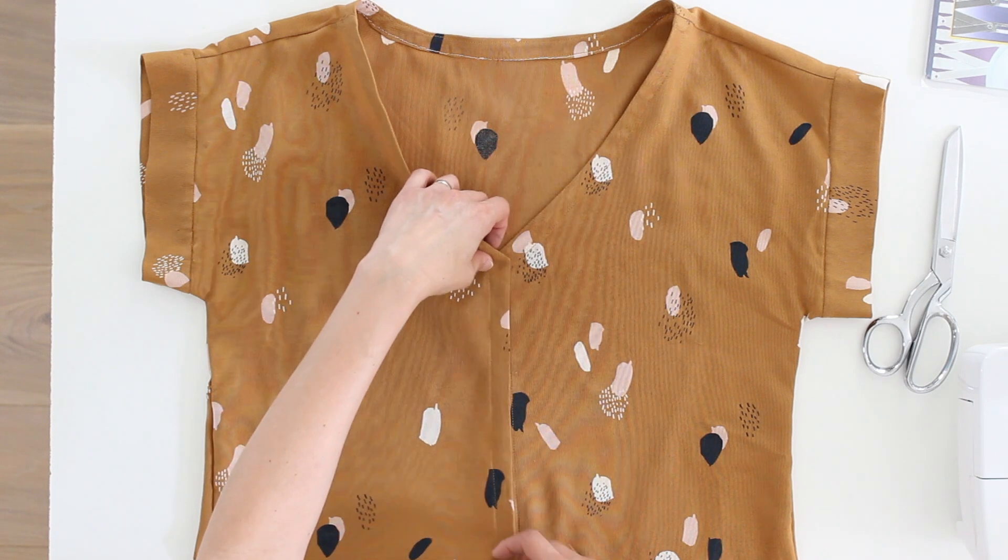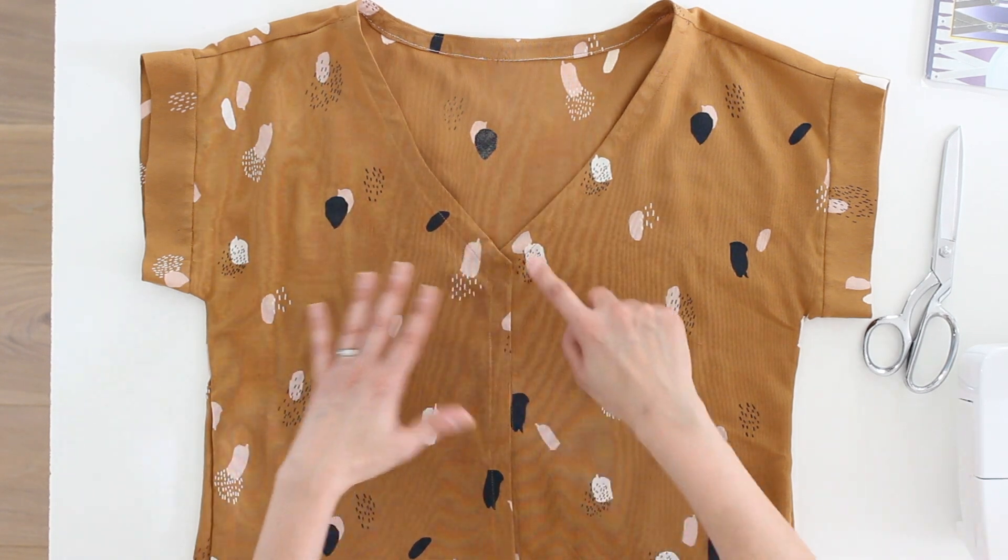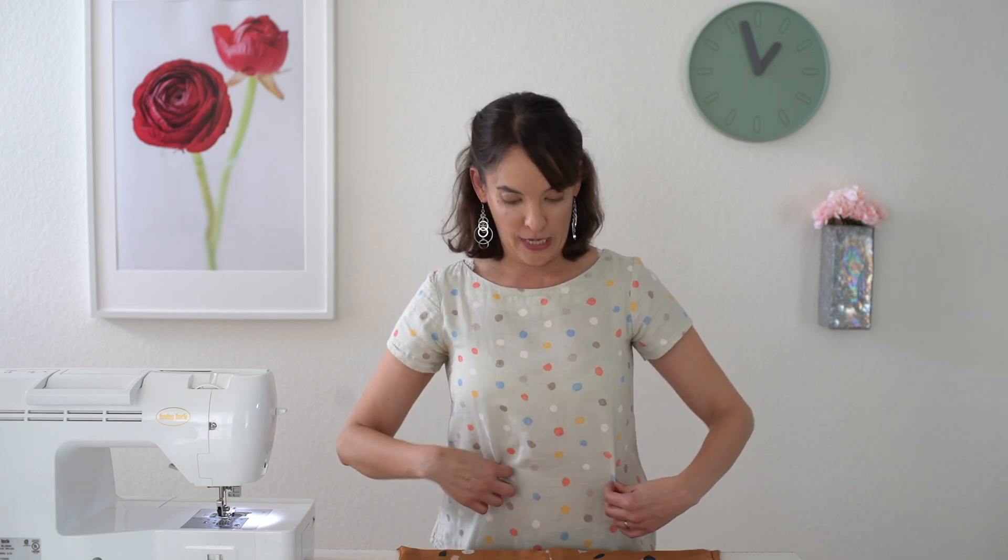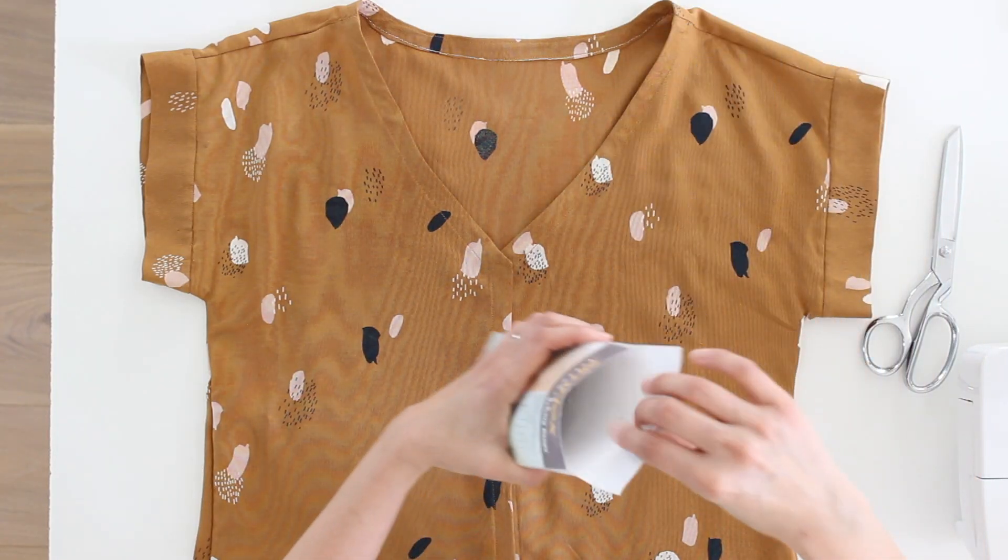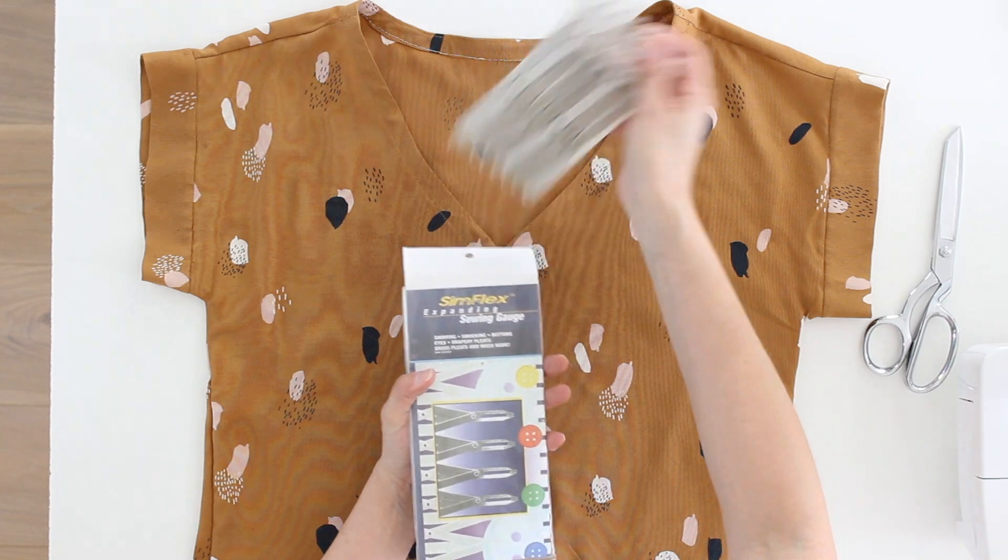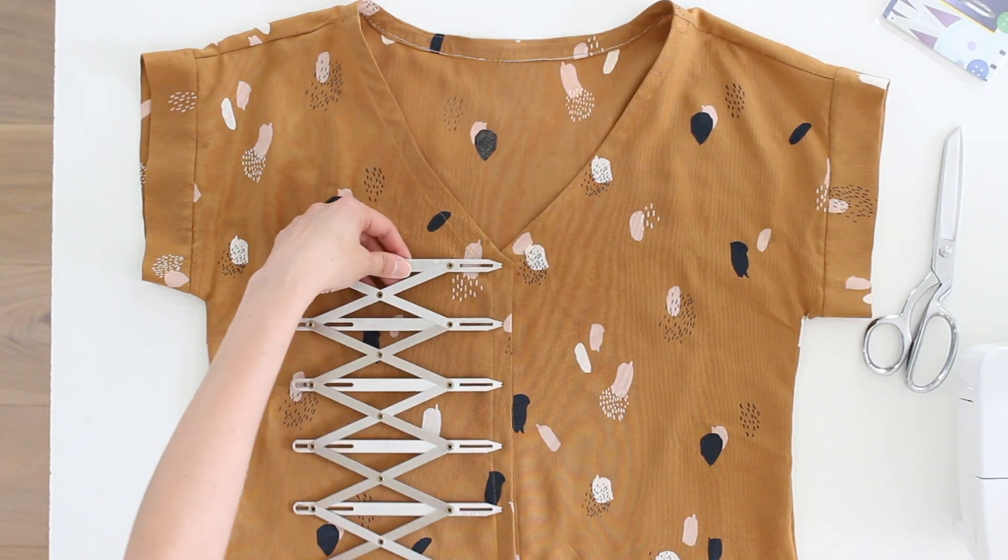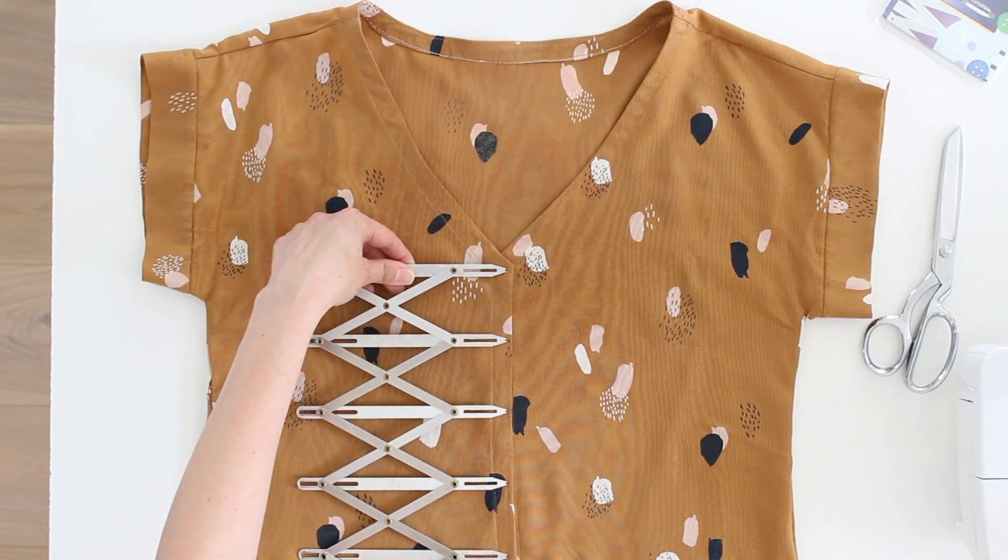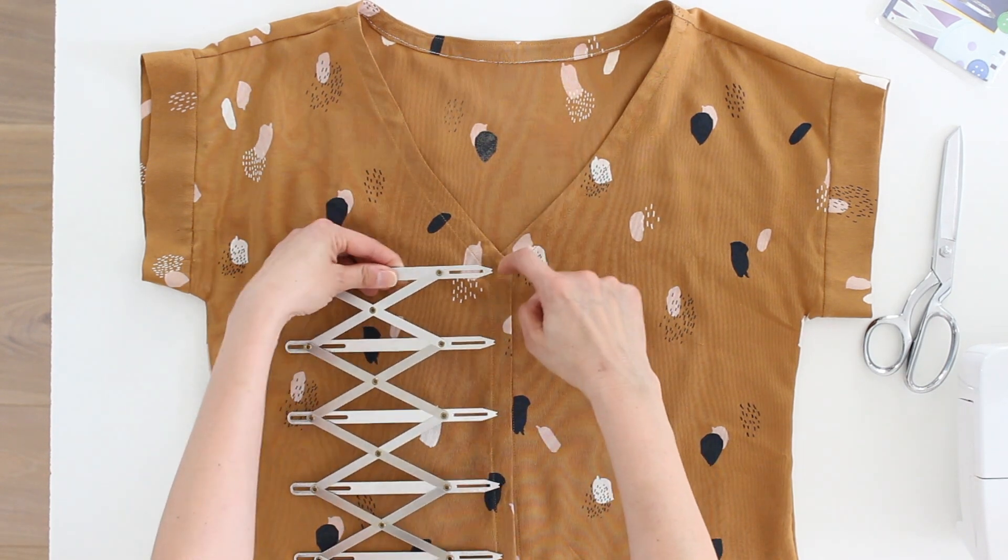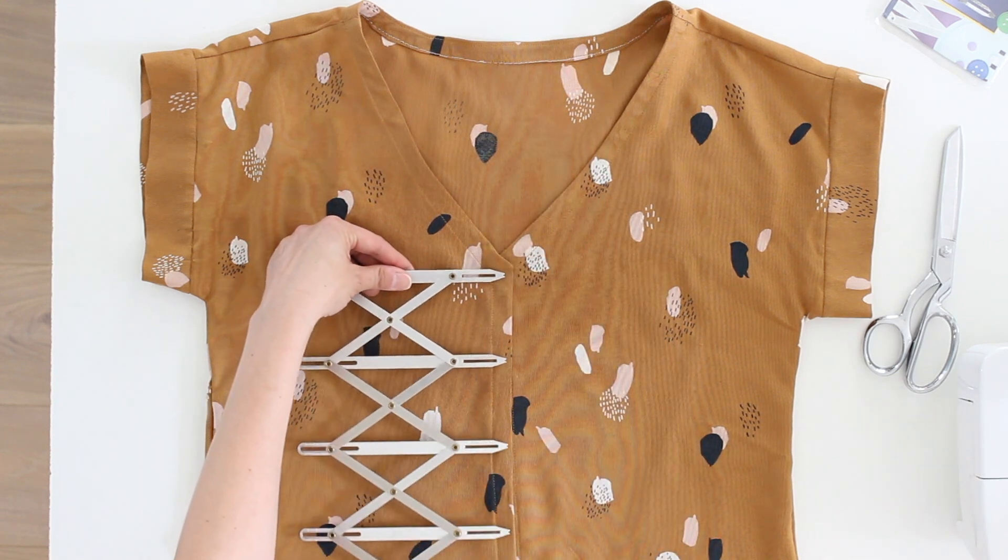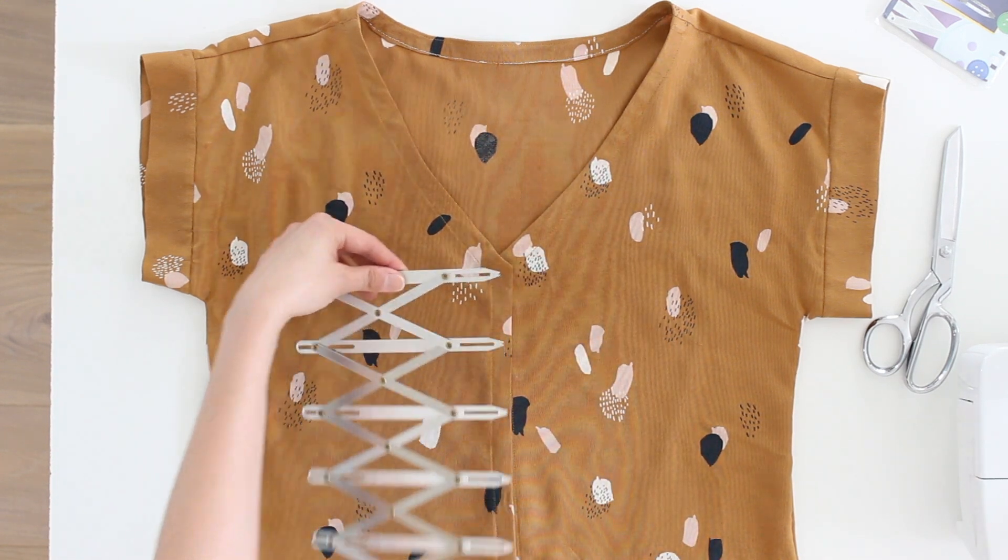So in order to do that I'm going to try it on first and kind of mark the fullest part of my bust. I'm going to want to make sure there's a button there, and then I'm going to use this tool, the Simplex Gauge, and I will use it to space out the rest of where I want my button holes. I definitely want one in this kind of corner area, and then it'll just depend like where my bust is from there, how I space them out from there down.